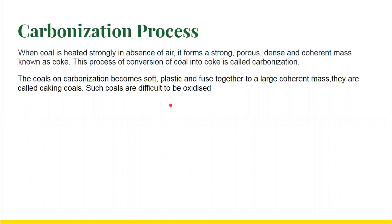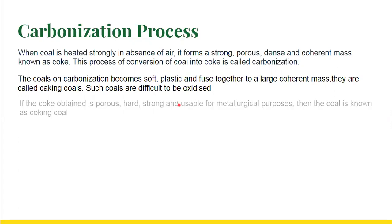There are two different types of coals: caking coals and coking coals. Caking coals means that after carbonization, the coals become soft, plastic, and fuse together to form a large coherent mass. These types of coals are known as caking coals and they are difficult to be oxidized.